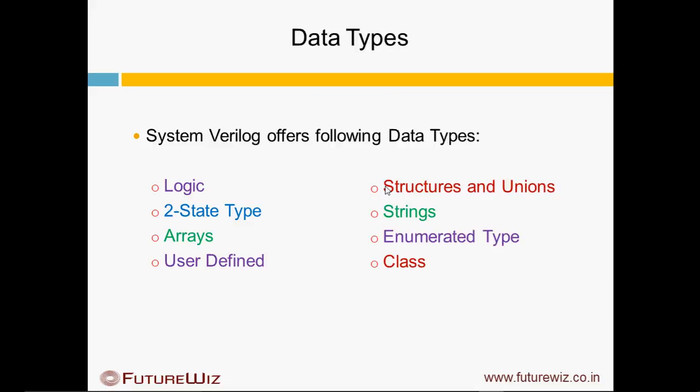System Verilog offers new Data Types which includes Logic, Two-State Types, Arrays, User-Defined Type, Structures, Unions, String, Enum Type, as well as Class.